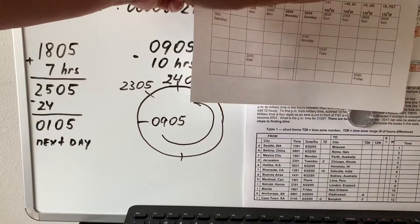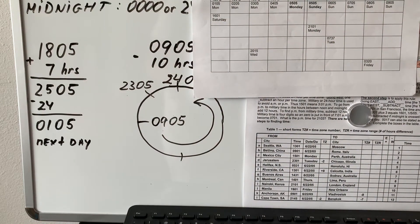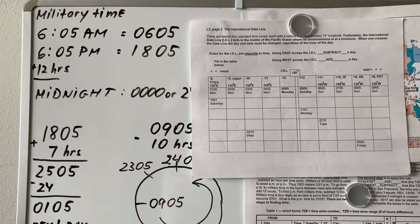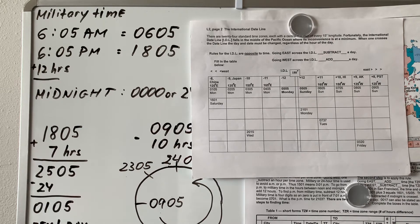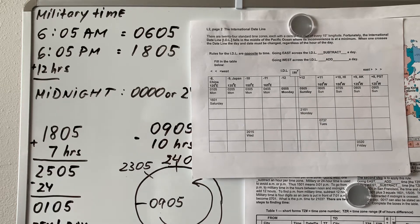Now let's discuss the International Date Line. Remember the rules for time zones and how to calculate time. The International Date Line is in the ocean to avoid confusion — it doesn't go through land masses because you have to change the date there. If you start from LA and go east, adding an hour per time zone, when you return to your starting point you'll have 24 extra hours. Going west you'd be missing 24 hours. To avoid this confusion, the International Date Line was created.